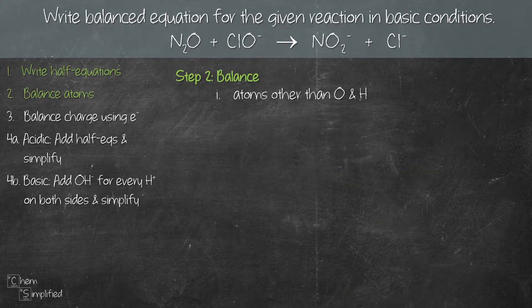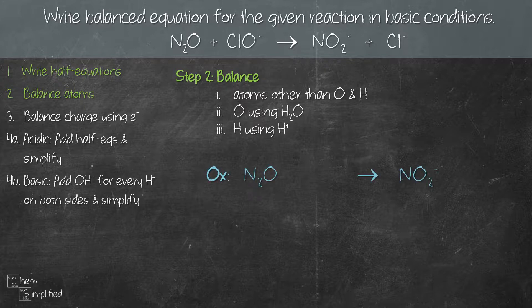Next we need to balance the atoms. It's very important that we follow the sequence, otherwise we're going to have a hard time balancing the equations. So we start with our oxidation equation. We need to balance all atoms except oxygen and hydrogen, so that means we need to balance the nitrogen. On the left hand side we have two nitrogen and on the right hand side we have one nitrogen, so we're going to put a 2 in front of NO₂⁻. Moving on, we balance oxygen using H₂O. On the left hand side we have 1 O and on the right hand side we have 4 O, so we add 3H₂O on the left hand side.